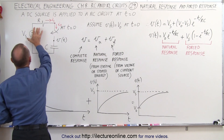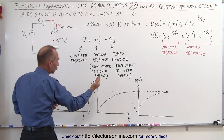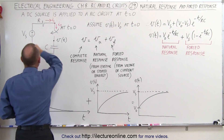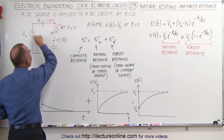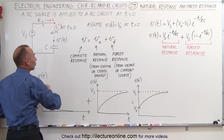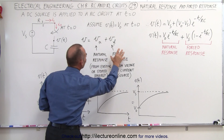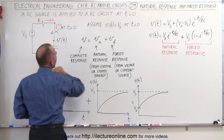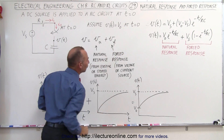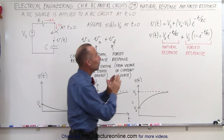The forced response is due to the input of the source — in this case the source voltage, though it could be a source current as well. In this example it's the source voltage that drives current to the circuit, and how the circuit behaves to that input is called the forced response.